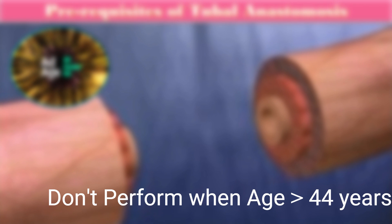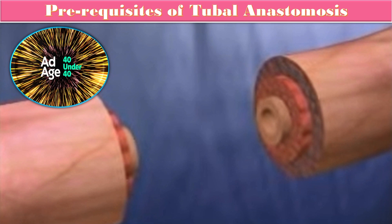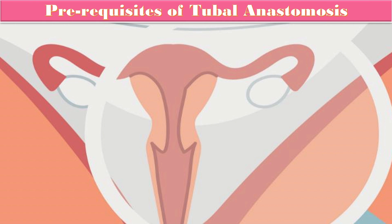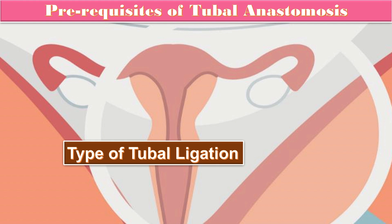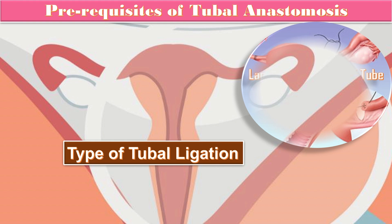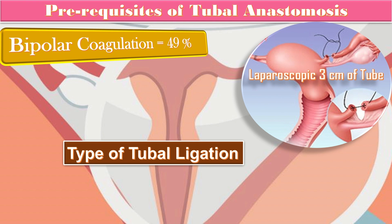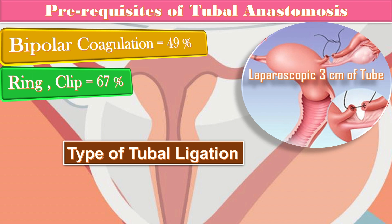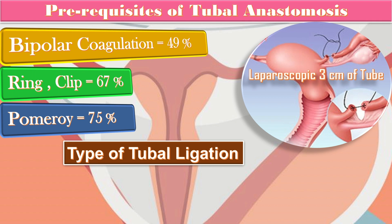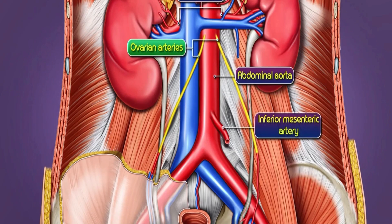We do not recommend this procedure when the age of the patient is more than 44 years. The next prerequisite is the type of tubal ligation. The laparoscopic procedure should only be done when the tubal size is at least 3 centimeters. Bipolar coagulation has a success rate of 49%, ring and clip carries 67% success rate, and with the Pomeroy technique the prognosis is 75%.